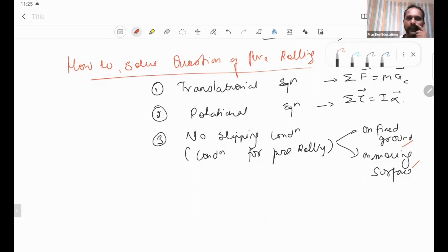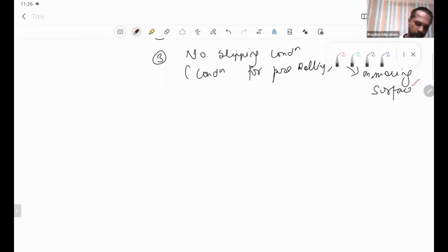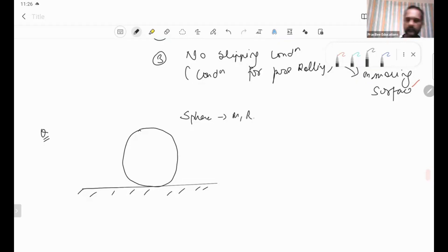The first question: there is a circular object, let's say a sphere. Mass is M, radius is R, moment of inertia I. For a sphere, moment of inertia is 2/5 MR squared. A force F is acting at the top point. Question is find the alpha of the sphere.